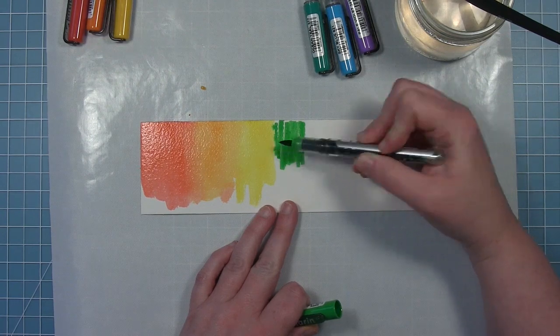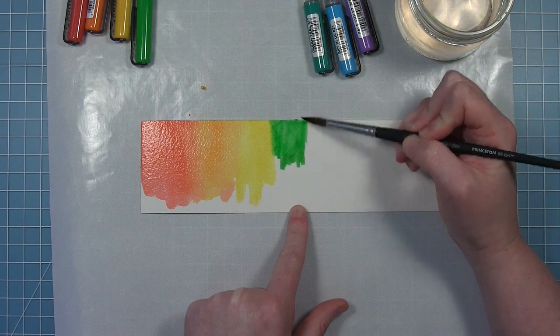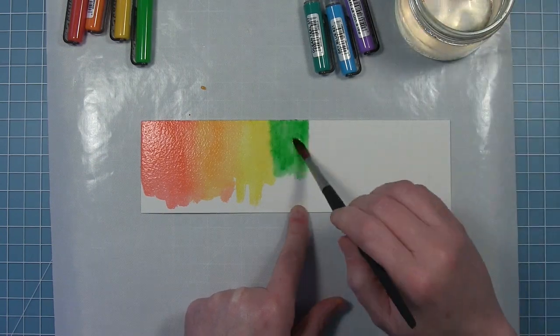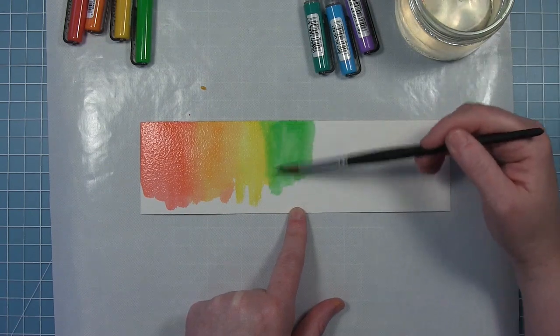Now I'm going to start back in the middle and work out from that yellow. So I've got a green here, and I'm just letting that yellow and that green blend together.